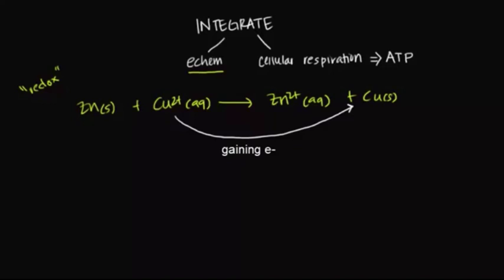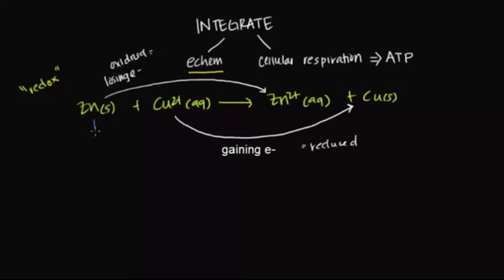On the other hand, solid zinc is turning into a positive charge, so it's losing negative charge — it's losing electrons and being oxidized. Another way to see this simultaneous gain and loss of electrons is to note that there is a flow of electrons from the zinc, which is losing electrons, to the copper ions, which are then reduced to solid copper. This is where electrochemistry comes in, because electrochemistry allows us to isolate this flow of electrons by building what is called an electrochemical cell.